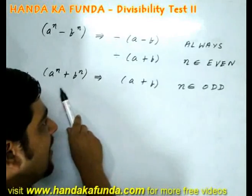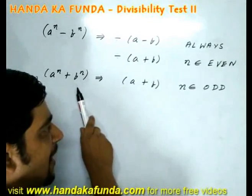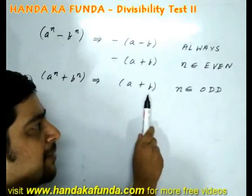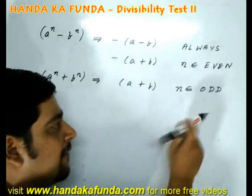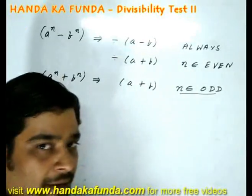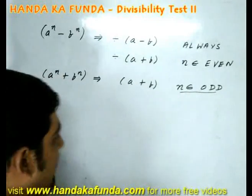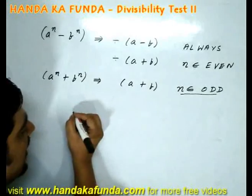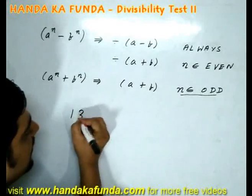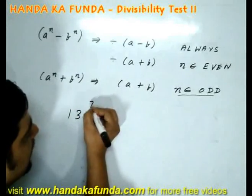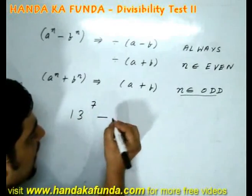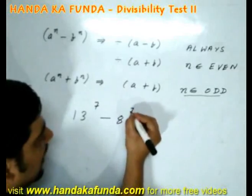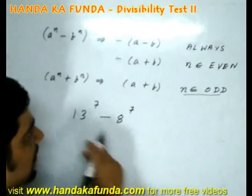Very similarly, a to the power n plus b to the power n is divisible by a plus b if and only if n is odd. For example, consider 13 to the power 7 minus 8 to the power 7.